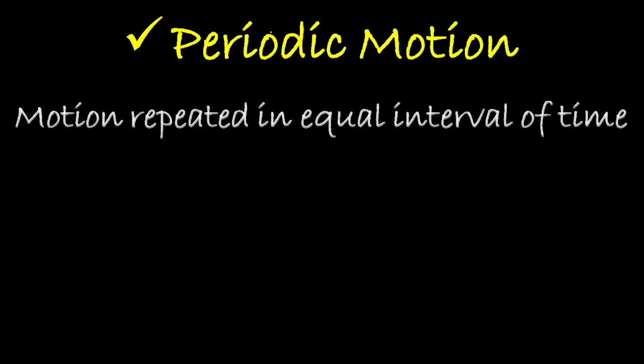The word 'periodic' itself tells you — it means the motion is repeated in equal intervals of time. Any motion that is repeated in equal intervals of time is called periodic motion. Periodic motion is a motion that repeats at equal intervals of time. The time to complete one full cycle is called the period.